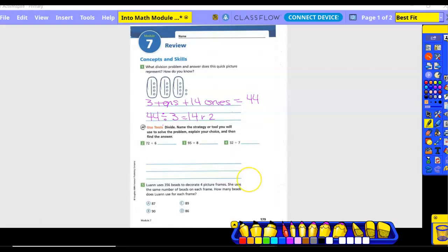Okay, so next one. Name the strategy or tool you will use to solve the problem, then explain your choice, and then find your answer. Okay, so you can either do a picture, right? You could do the house, right? The standard form. Okay? So you have a couple different ways you can do the house.